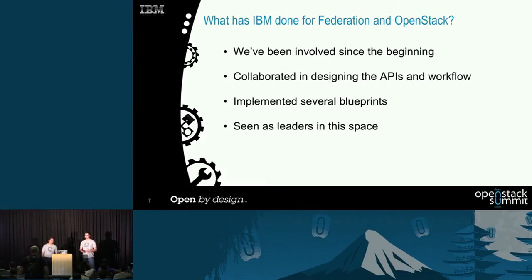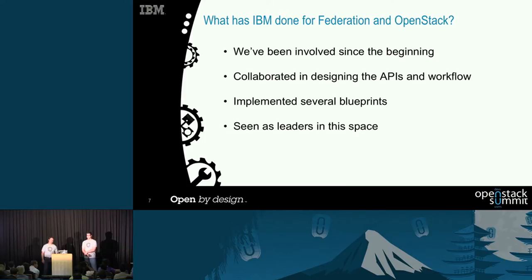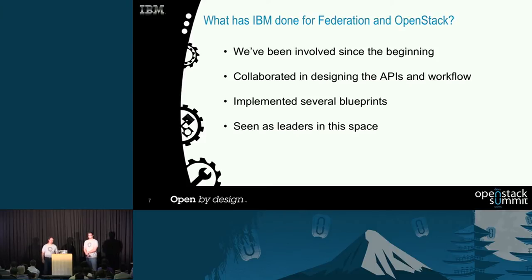What is IBM doing for federation in OpenStack? I've been involved since the very beginning, contributing to all of the blueprints listed previously. We've collaborated heavily with Rackspace, Red Hat, CERN, and HP to create the APIs and the functionality in the code. We've implemented several blueprints together, and I like to think that we're seen as leaders in this space.